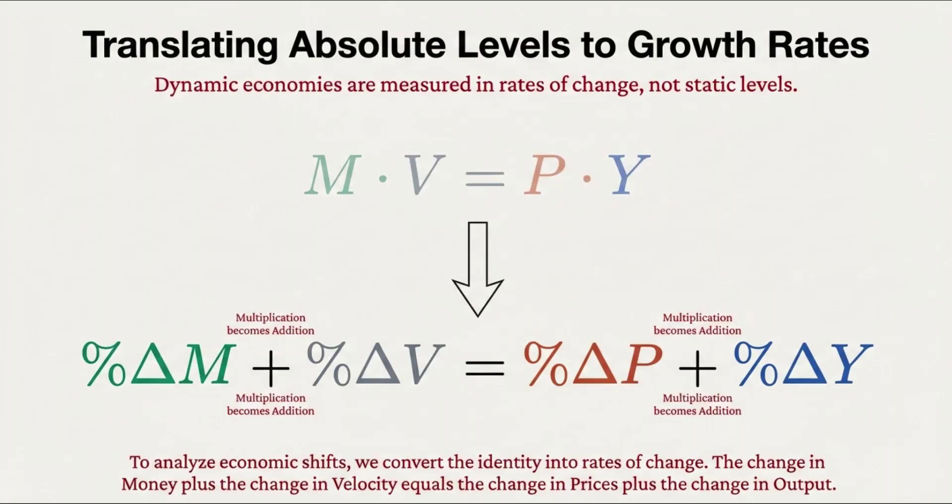Let's break this down piece by piece, focusing on the concepts first. On one side of this identity, you have total spending, and that's made up of two things working together. The first factor is the money supply — that's M. It's the total amount of dollars, pounds, or whatever is circulating in the system: all the cash, bank deposits, all that stuff. The second factor is where the real magic happens: the velocity of money. So it's not just how much money there is, but the speed of that money — how many times that average dollar changes hands in, say, a year.